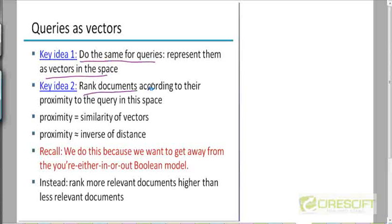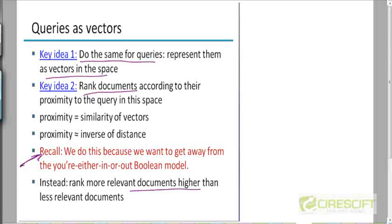We can rank the documents according to their distance from the query — their proximity to the query in this V-dimensional space. Note that this is very different from a Boolean retrieval model where either a document is matching the query or it's not. Now you have all the documents in this V-dimensional space at different distances from the query. So you can come up with a global ranking of documents based on increasing distances from the query. The documents that are ranked higher will be the ones that are closer to the query in this V-dimensional space, and those are the more relevant documents.